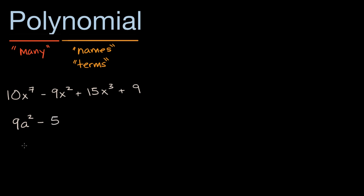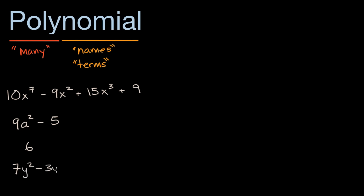Even if I just have one number, even if I were to just write the number six, that can officially be considered a polynomial. If I were to write seven y squared minus three y plus pi, that too would be a polynomial.